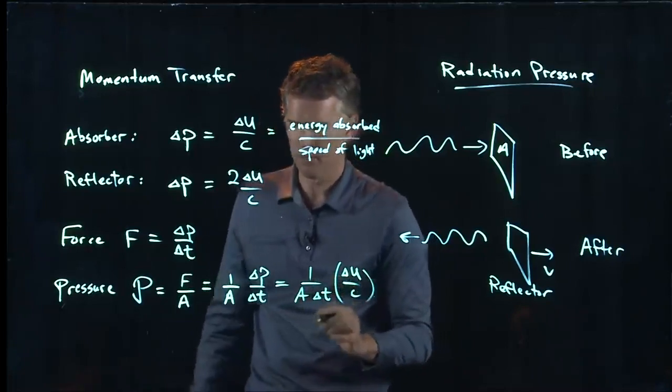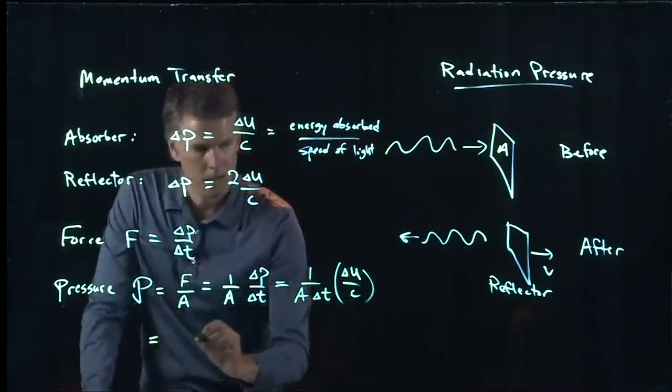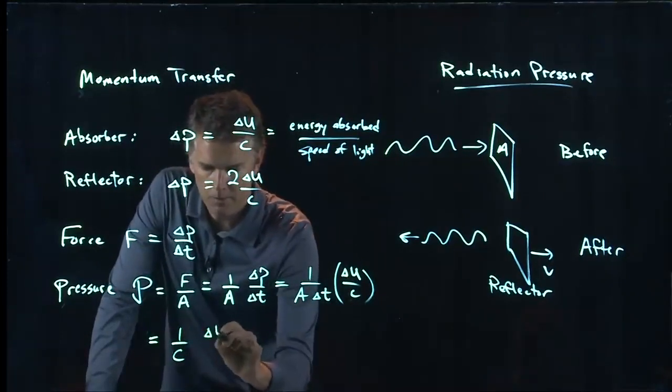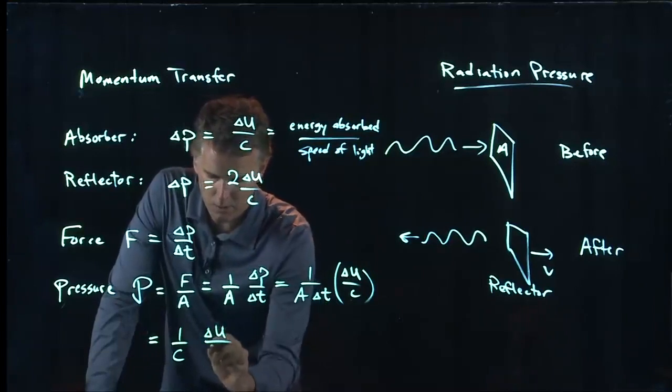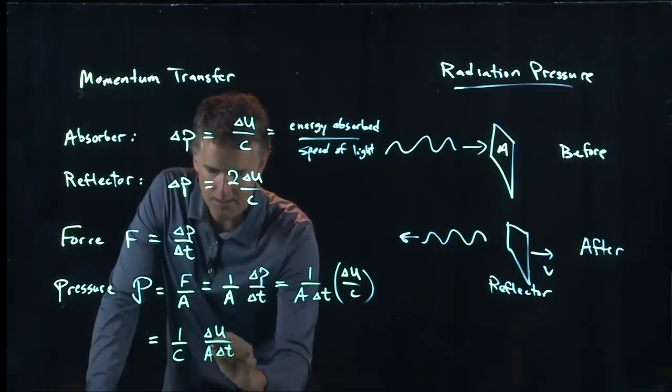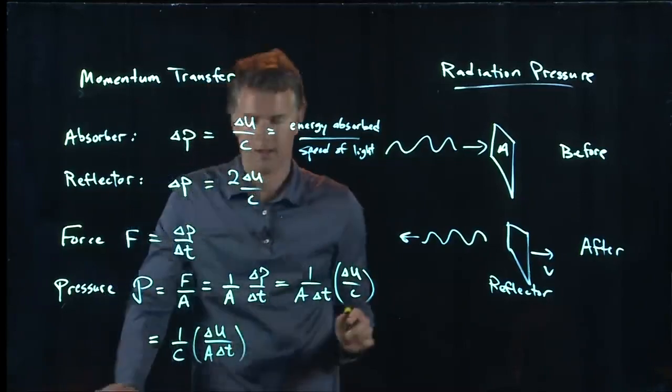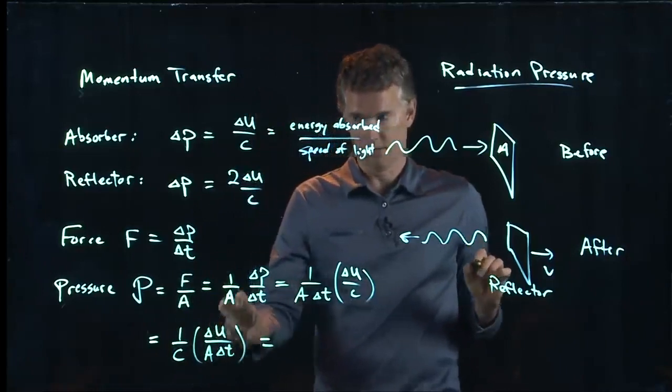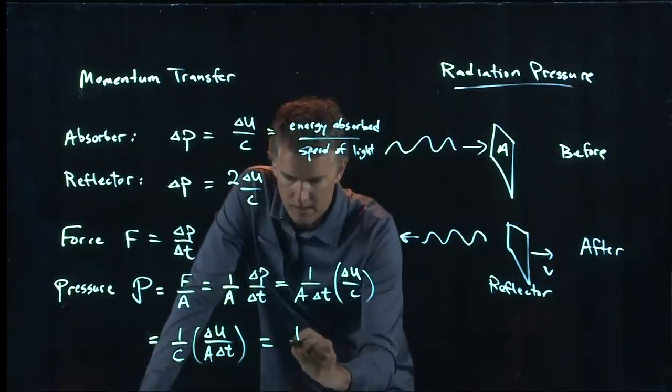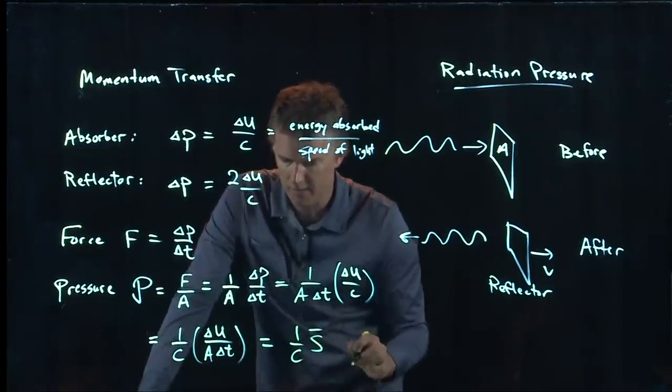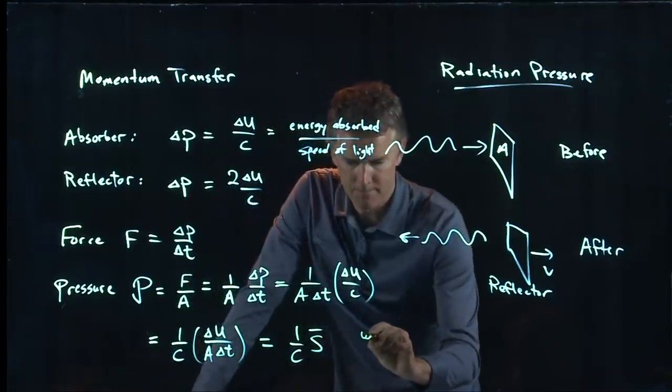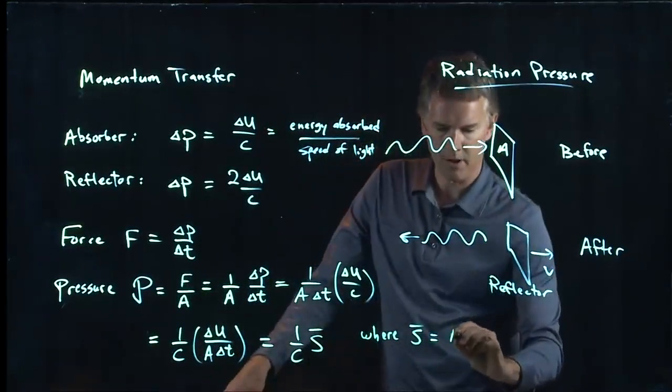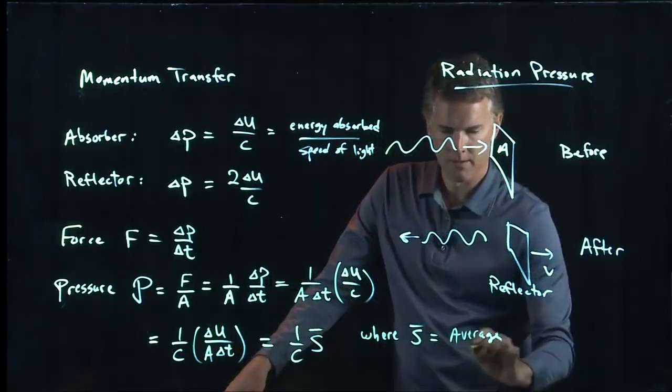And now let's rearrange this a little bit. We can write it as the following: one over C times delta U over A delta T. But we know exactly what this stuff is. This is our good old intensity. And so this whole thing simplifies to that.